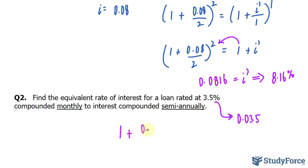We'll write down 1 plus 0.035 over. It's being compounded monthly. So I'll divide that by 12 and raise it to the power of 12. On the right side, I'll write down 1 plus I prime over. It's being compounded semi-annually. So we'll divide this by 2 and raise it to the power of 2.